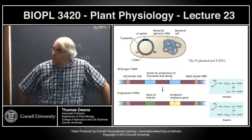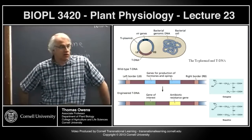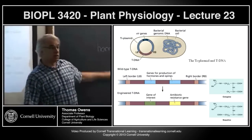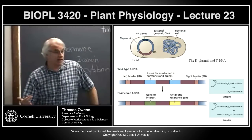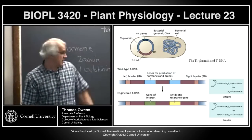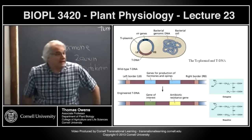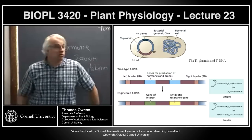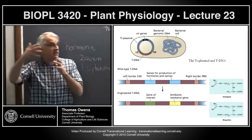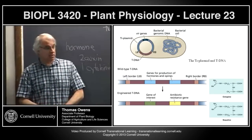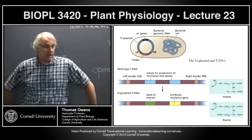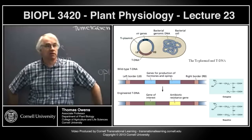The T-DNA encodes two genes involved in auxin biosynthesis that convert tryptophan into indole acetic acid by the bacterial pathway, and one gene involved in converting AMP into cytokinins. Those three genes are sufficient to have uncontrolled production of auxin and cytokinin, which allows the cells to divide. There are also probably a dozen or so genes involved in opine production.